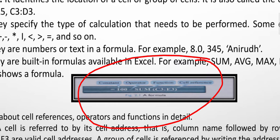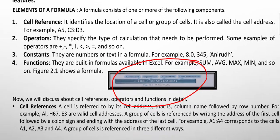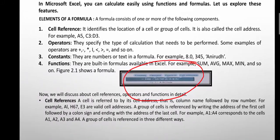The constant is 100, then the operator is minus. Then SUM opens bracket, C3 to E3, meaning we want to sum from C3 cell to E3 cell. 100 minus SUM C3 to E3, this is an example of a formula.